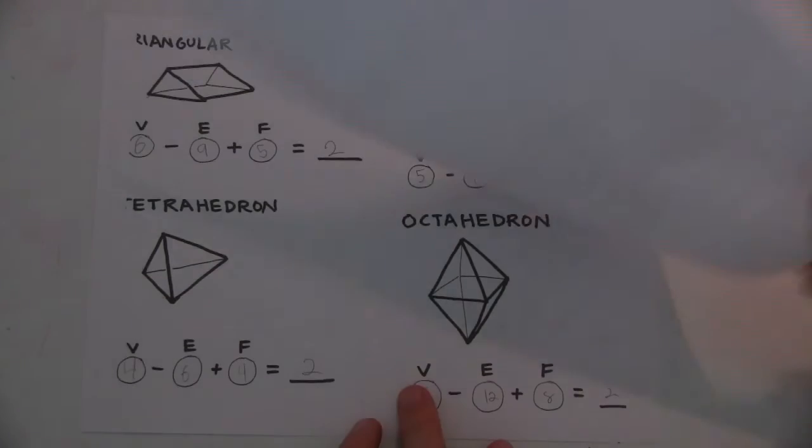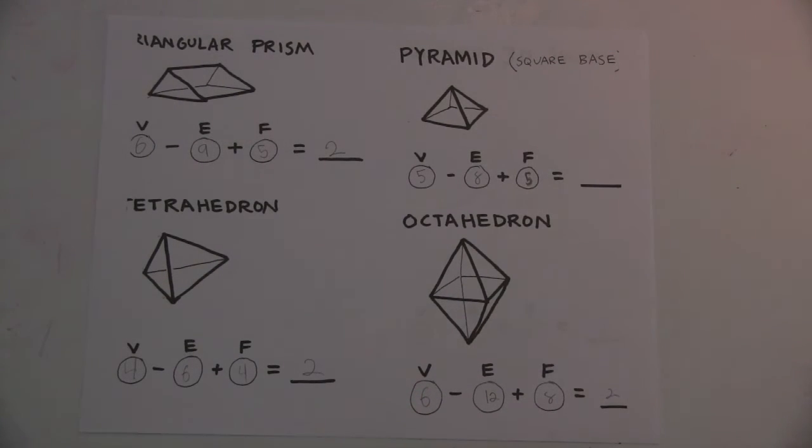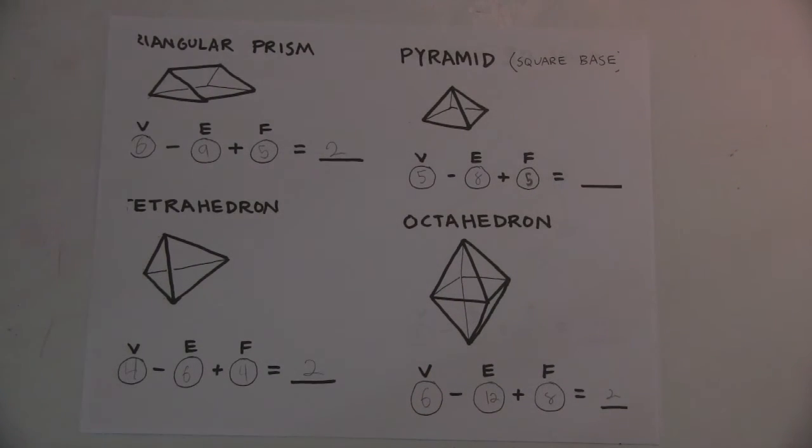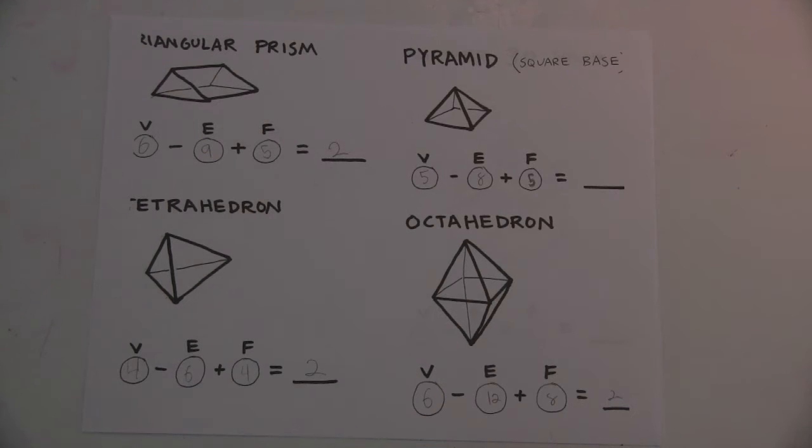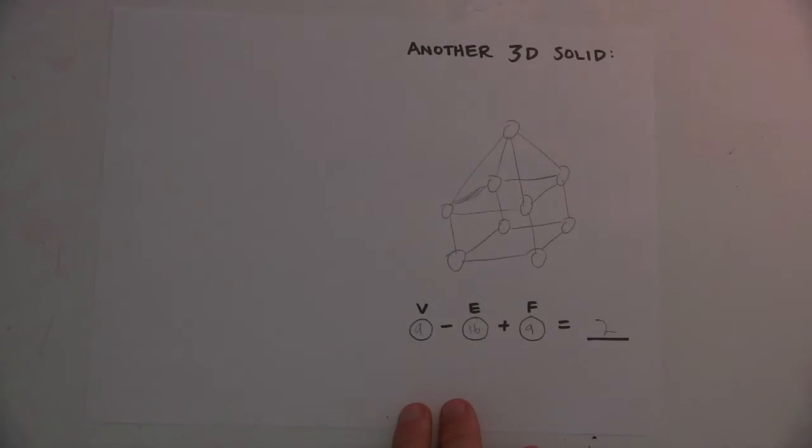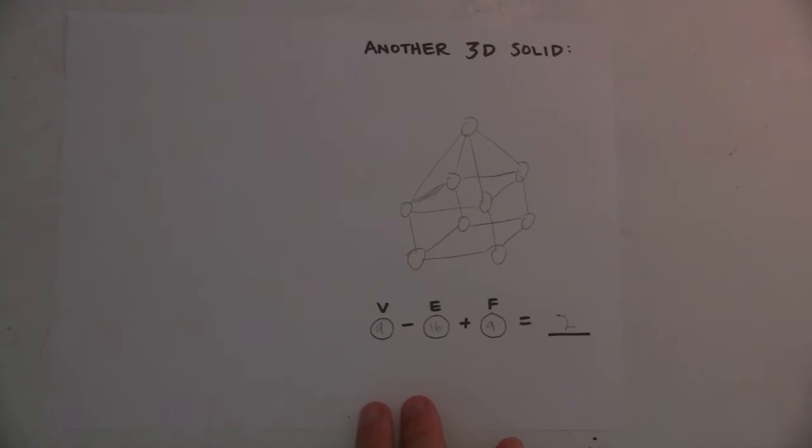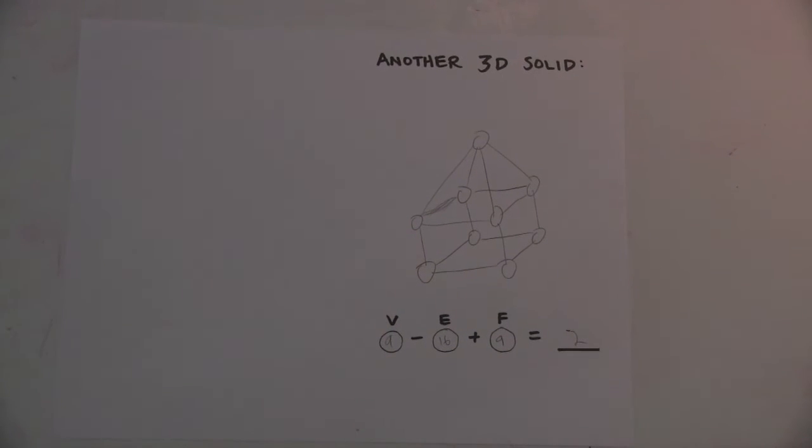So you go through with all of these three-dimensional solids, and it all works out to be 2, surprisingly enough. Oh, there's the last one. You just draw another 3D solid. I just did a square pyramid on top of a sort of a smooshed cube box. And that also worked out to be 2.